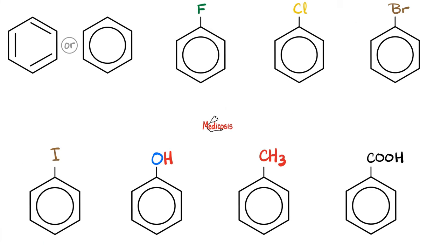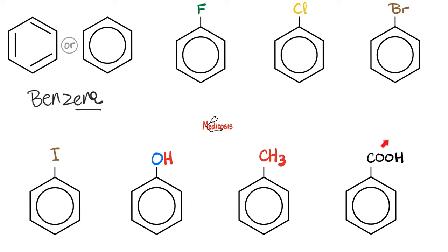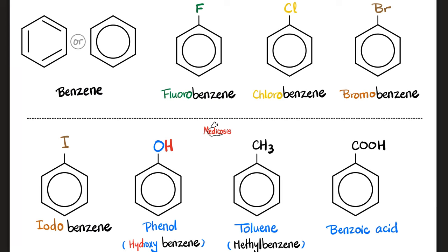Can you name these lovely compounds? The first one is benzene — you can draw it with alternating double bonds or with a circle inside. It ends in '-ene,' which reminds us of double bonds. That's aromatic. Fluorobenzene, chlorobenzene, bromobenzene, iodobenzene. The one with OH is hydroxybenzene, or better: phenol. With a methyl group: methylbenzene, or better: toluene. And with COOH — a carboxylic acid group — plus benzene together: benzoic acid.